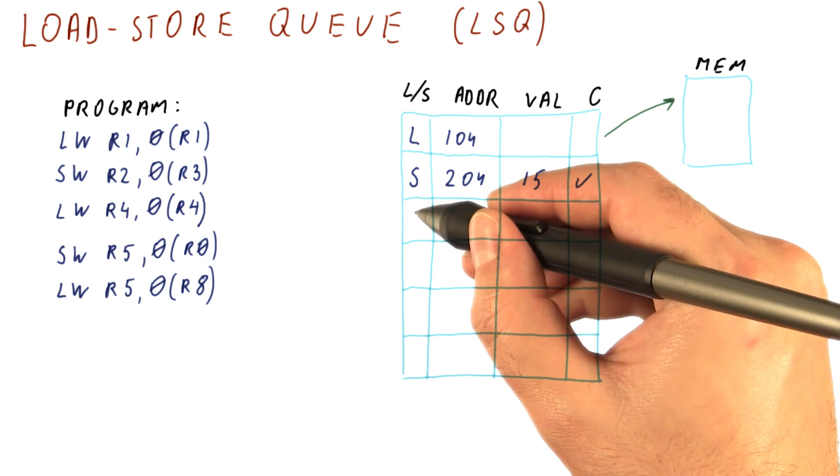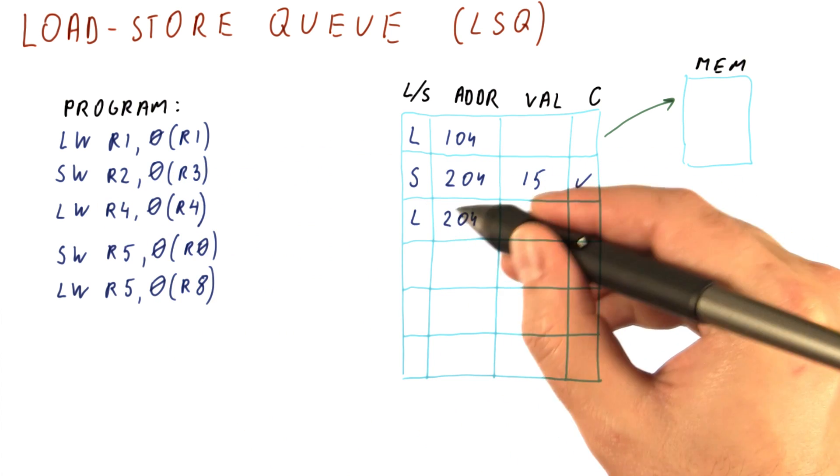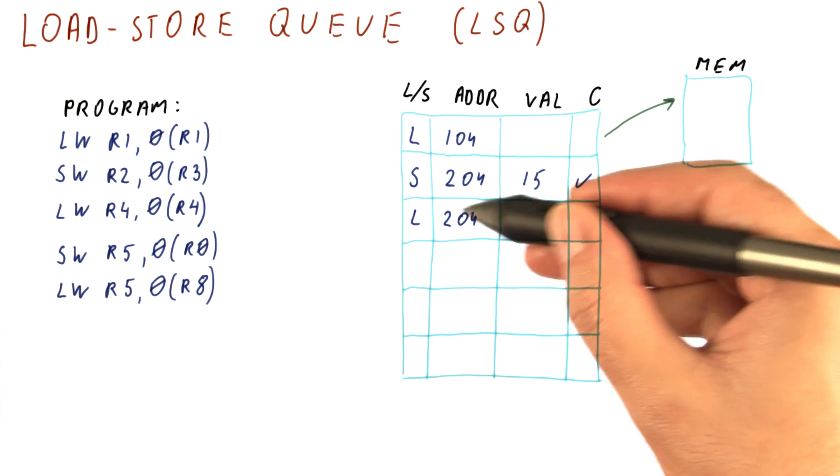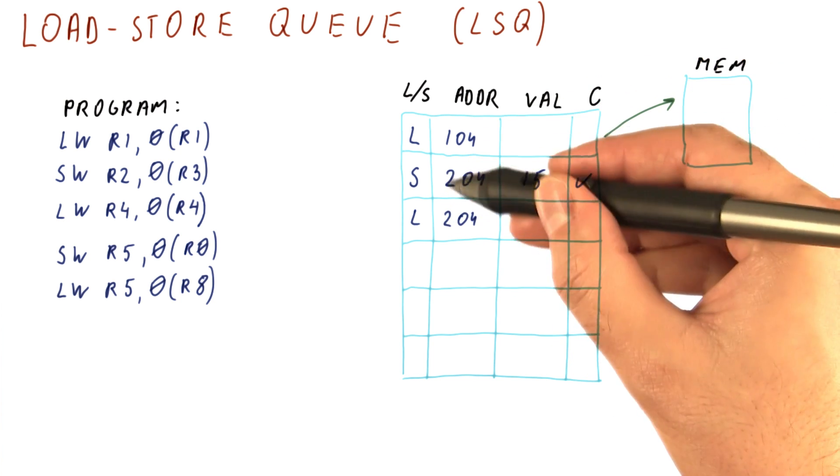The next load, let's say it eventually computes the address of 204. For every load, when it computes the address, we check in the load store queue if any store matches that address.